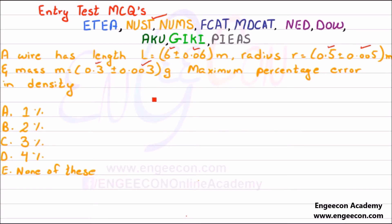First, we have to write a relationship between the mass, length, radius, and density. As we know, density equals mass divided by volume. In the case of a wire, the volume equals π r² L. So we can write density as M divided by π r² L.